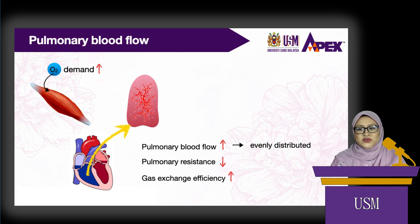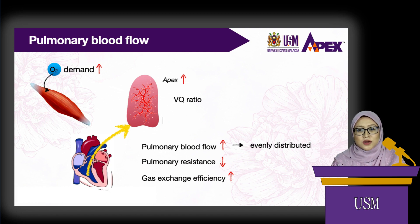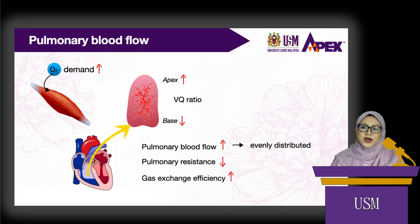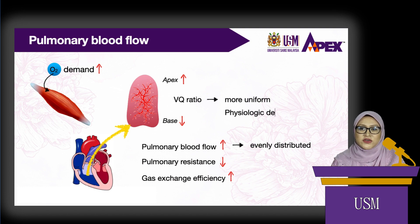The ventilation-perfusion ratio is normally uneven in the upright lungs — it is usually higher at the apex and lower at the base. Because pulmonary blood flow becomes more even, the VQ ratio also becomes more uniform, producing a decrease in physiologic dead space.